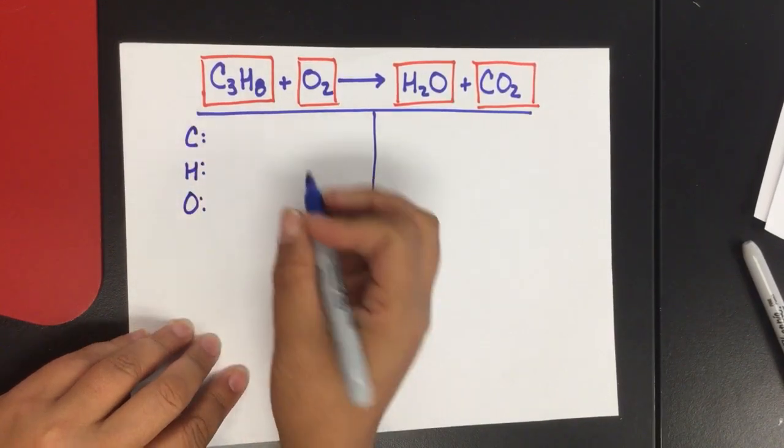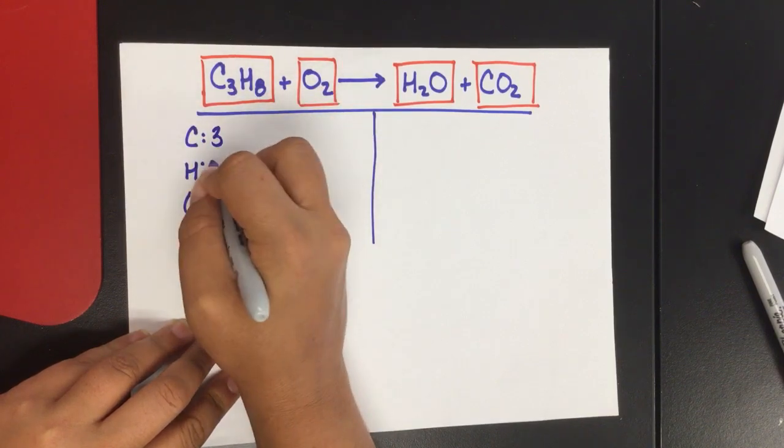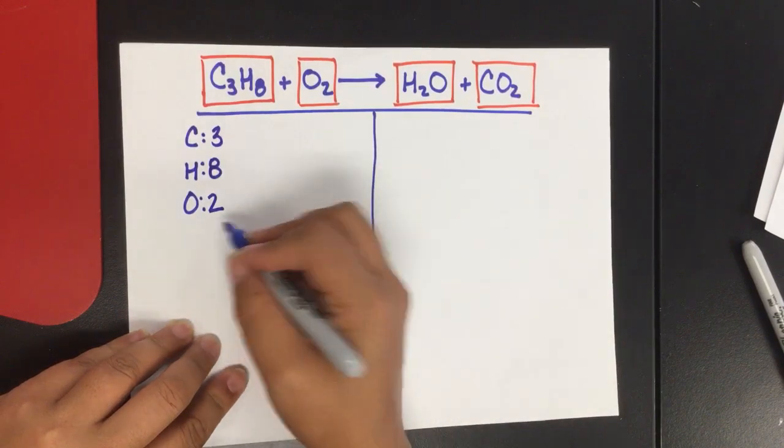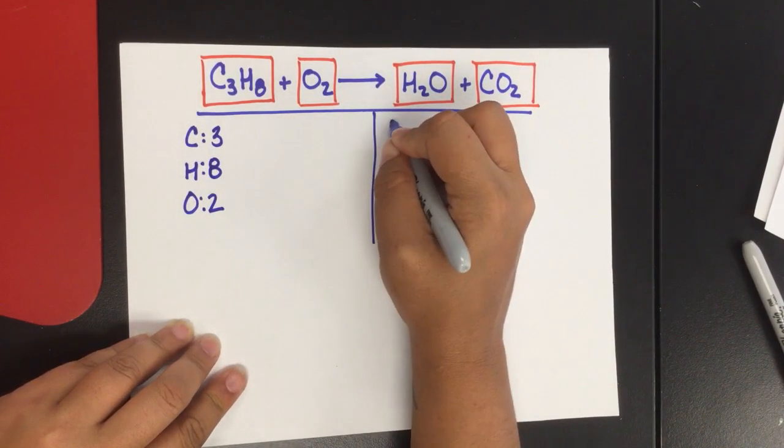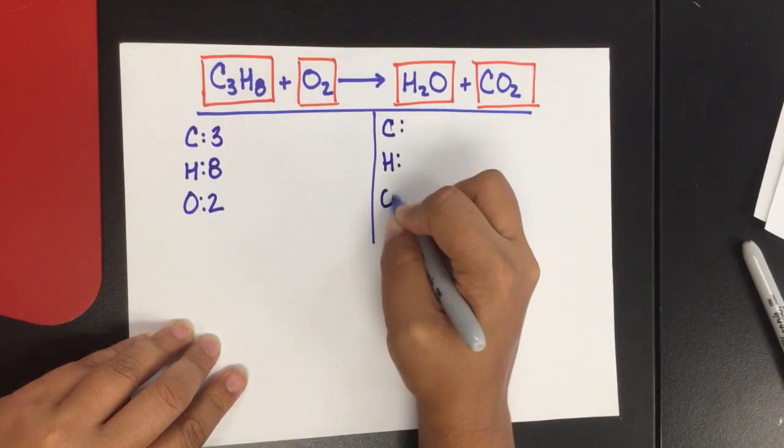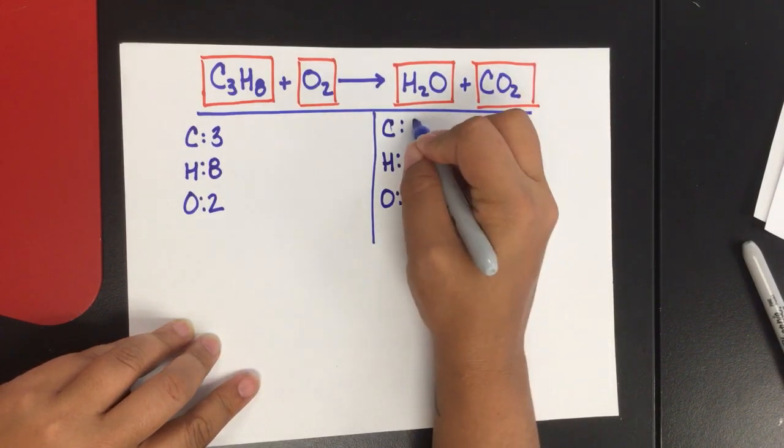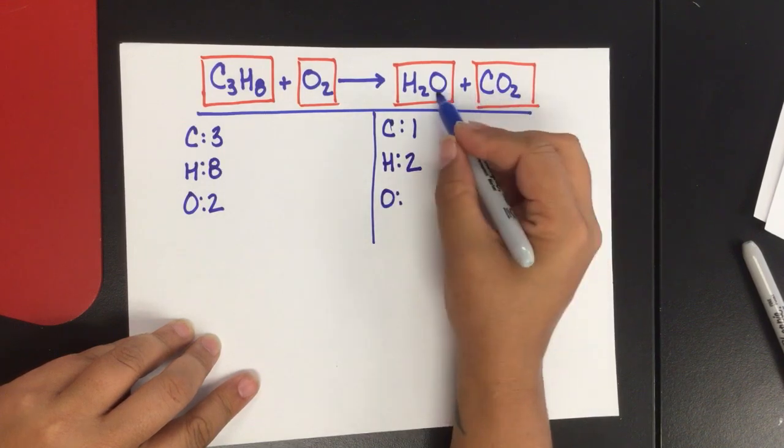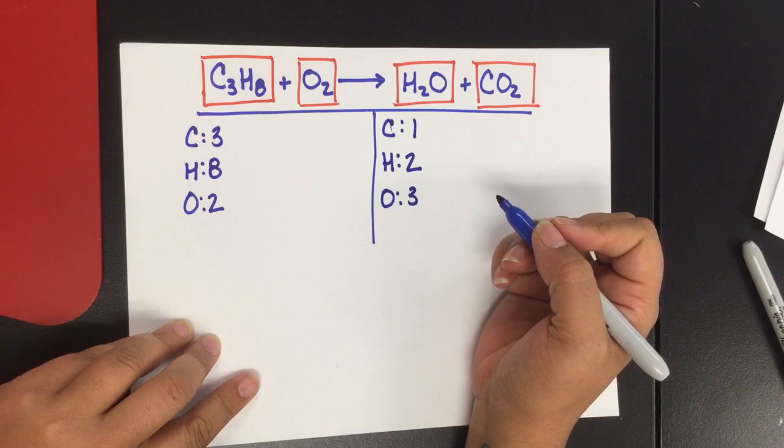So I'm going to do my initial count. I have C's, H's, and O's. Three carbon, eight hydrogen, two oxygen on my reactant side. And again, I'm going to keep them in the same order so that I can easily tell when my numbers match. In this case, I have one carbon, two hydrogen, and two, three oxygen.